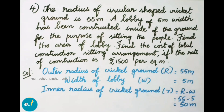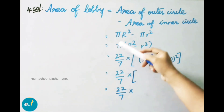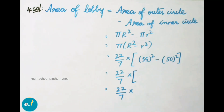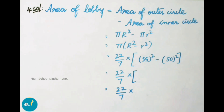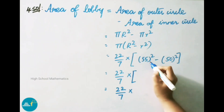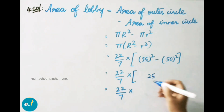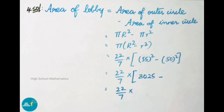Area of lobby = area of outer circle − area of inner circle = π·R² − π·r² = π(R² − r²) = 22/7 into (55² − 50²). For 55²: 5 × 5 = 25; next digit is 5, next number is 6, so 5 × 6 = 30. Therefore 55² = 3025. And 50² = 2500.